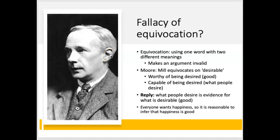Now, is this the fallacy of equivocation? G.E. Moore says that it is. His argument is that equivocation is when you use one word with two different meanings and conflate those two different meanings. According to G.E. Moore, Mill commits this fallacy, and it makes his proof invalid. Moore says Mill equivocates on the term 'desirable' and conflates two different meanings: the first is that desirable means something is worthy of being desired — that it is a good. He equivocates and conflates this with the other meaning of desirable, which means capable of being desired — what people actually desire.